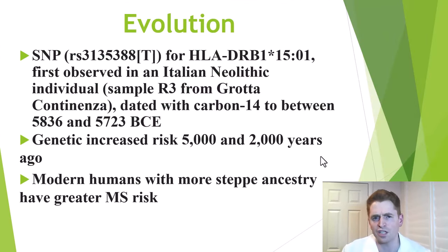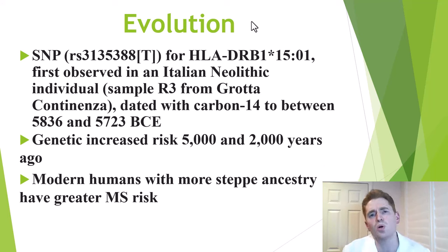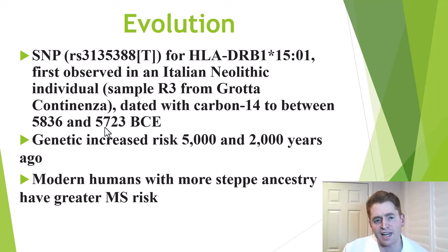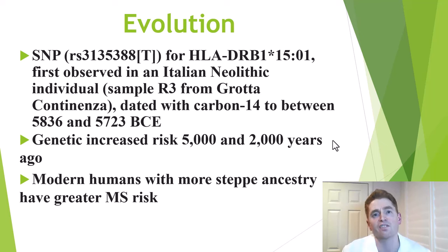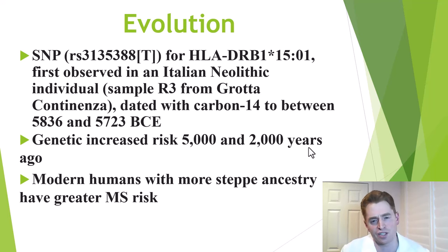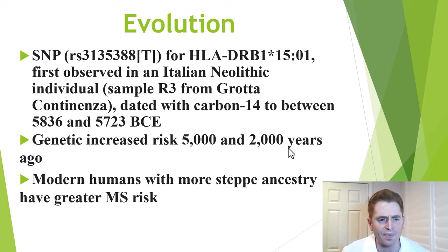Let's take a closer look at the evolution of the MS gene. The earliest human remains containing the single nucleotide polymorphism most associated with MS risk is in the area of modern Italy, dating to the Neolithic period — carbon-14 dated between 5836 and 5723 BCE. Through their statistical analysis, the researchers determined that this gene used to be rare but dramatically increased in prevalence between 5000 and 2000 BCE, suggesting there must have been some selection — some advantage to having it at the time. Modern humans with more steppe ancestry have greater risk of MS.